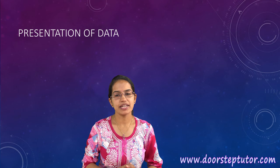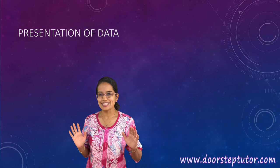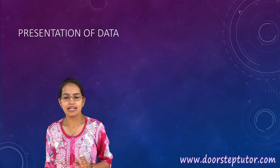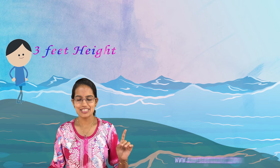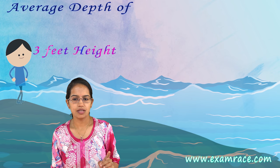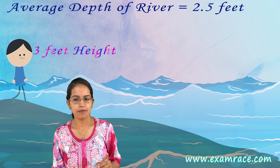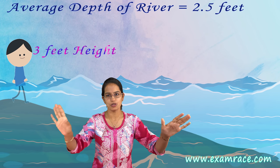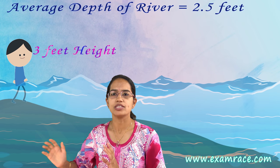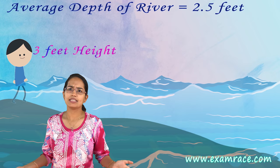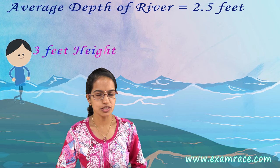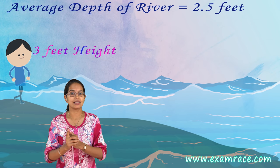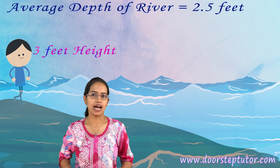Here's a simple example. There is a boy who is 3 feet in height. There is a river this boy is trying to cross — and he does not know swimming. The average depth of this river is 2.5 feet. Will he be able to cross? You might say yes, since the average depth is just 2.5 feet and he is 3 feet tall. But the most important thing lacking here is the detailed understanding of the data.